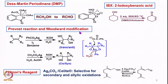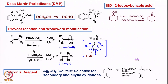We saw the Prevost reaction and its Woodward modification: starting with an olefin under two different conditions, under dry conditions or aqueous conditions, we get the trans (anti-diol) or cis (syn-diol), respectively. We discussed the mechanism and went through this particular type of intermediate — if water is present the intermediate opens to give the cis-diol, while under non-aqueous condition the nucleophile attacks to give anti-addition forming the trans-diol. We also looked at Fetizone's oxidation using silver carbonate on Celite for selective secondary and allylic oxidations.